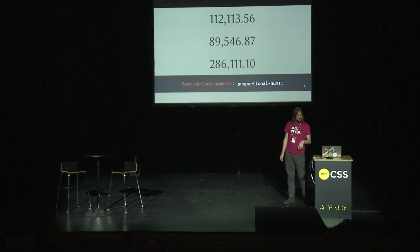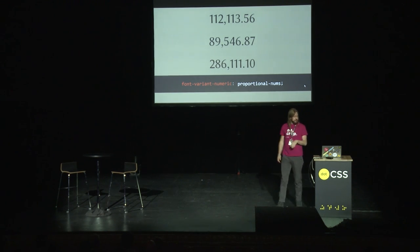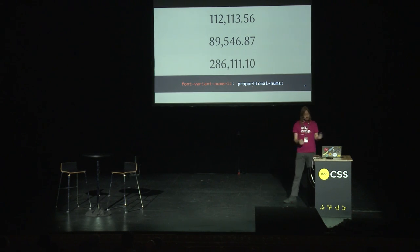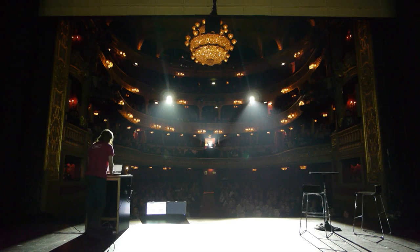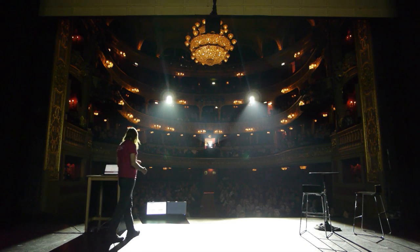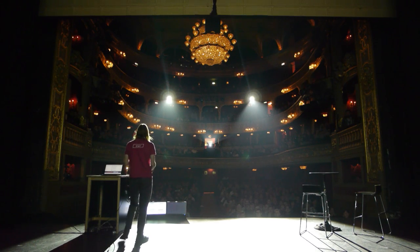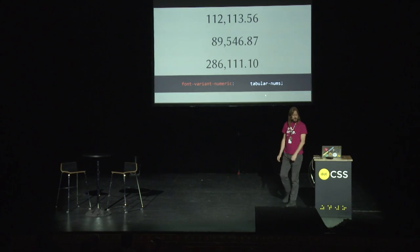Here's another example — tables of numbers. You could use a monospace font to align them, but that would look super ugly. What you actually want is a proportional font where all the text is proportional but the numbers all take up the same width — a principle called tabular numbers. And suddenly they all line up nicely.